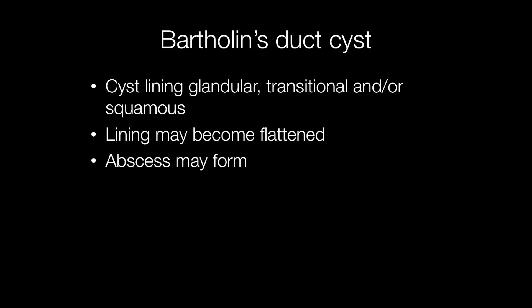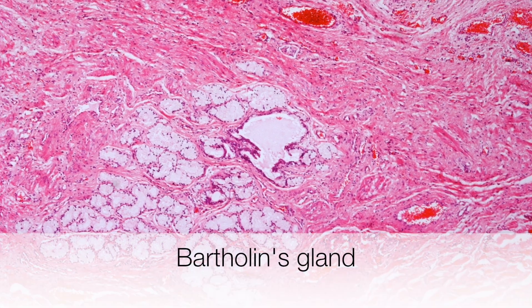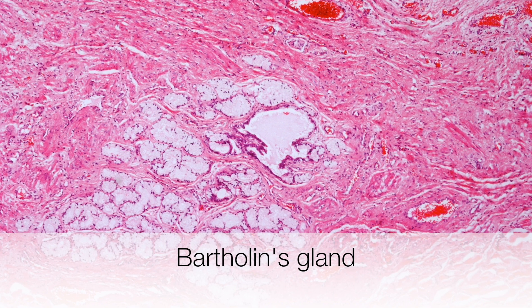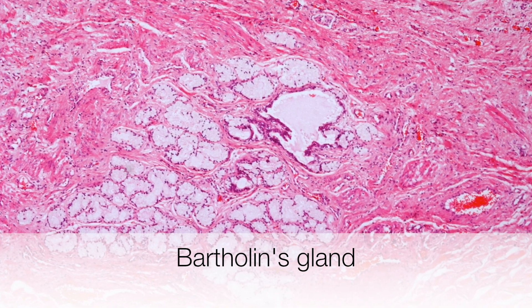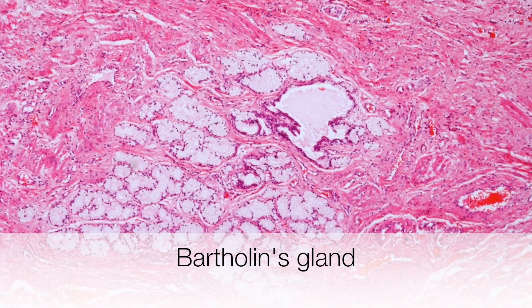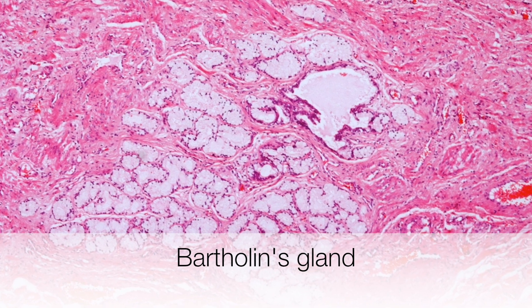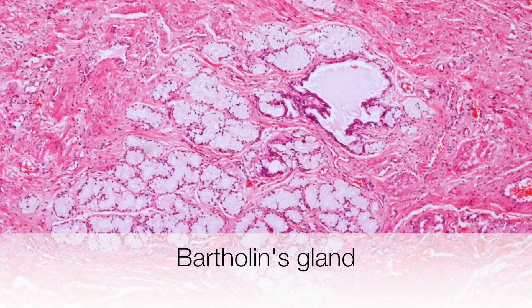Over time the lining may become flattened, and a complication of a Bartholin duct cyst is formation of an abscess. At the bottom left of the picture is a Bartholin's gland, and the purpose of the gland is to produce the lubrication for the vagina.